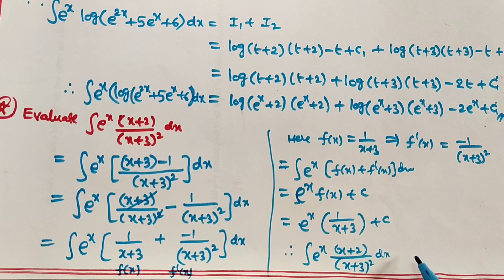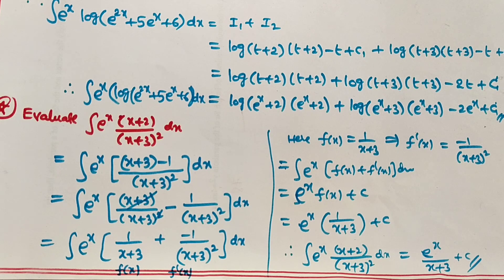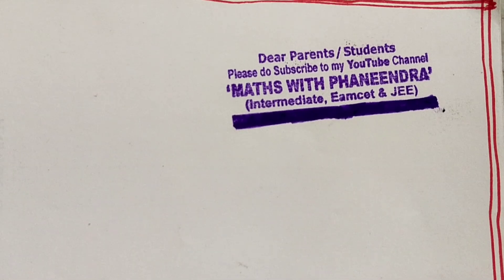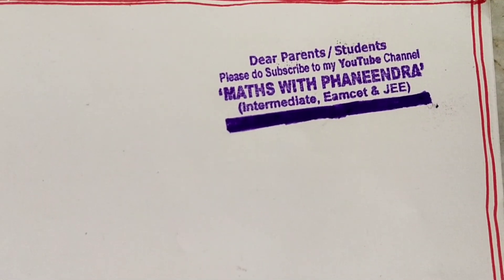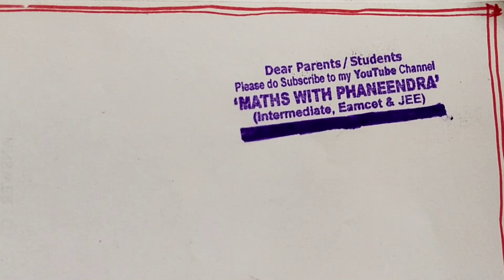Similarly, consider I₂ = ∫log(t+3) dt. Wherever t+2 appeared in I₁, t+3 will appear — the structure is the same. We write ∫log(t+3)·1 dt, with log(t+3) as f(t) and 1 as g(t), and apply integration by parts again.